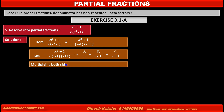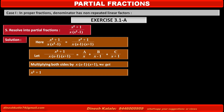Multiplying both sides by x into x minus 1 into x plus 1, which is the denominator of the given fraction, the left-hand side becomes x squared plus 1. On the right-hand side, the first term becomes A into x minus 1 into x plus 1, the second term becomes B into x into x plus 1, and the third term becomes C into x into x minus 1.